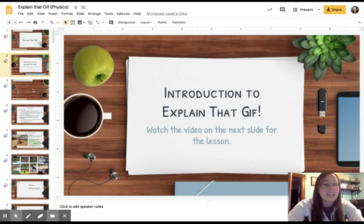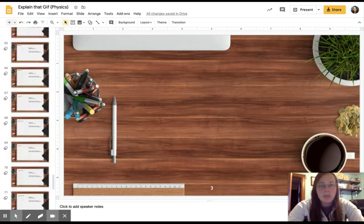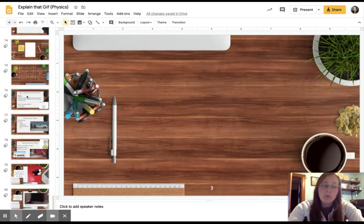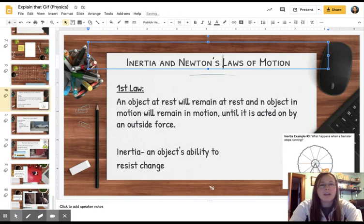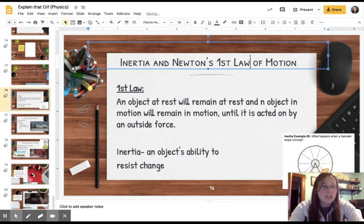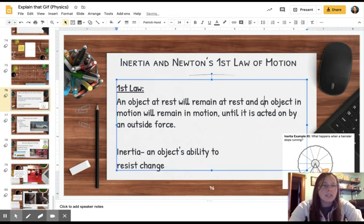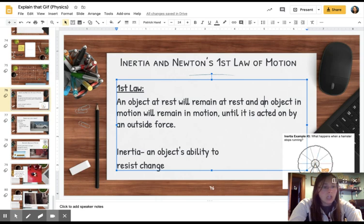Before we actually get into what we're doing, let's go ahead and review some of the concepts of Newton's laws through GIFs so that this process becomes a little bit familiar for you. So inertia and Newton's first law, first law of motion. An object at rest stays at rest, and an object in motion stays in motion until it's acted on by an outside force. Inertia is basically an object's ability to resist change. It is why objects at rest don't want to start moving on their own.